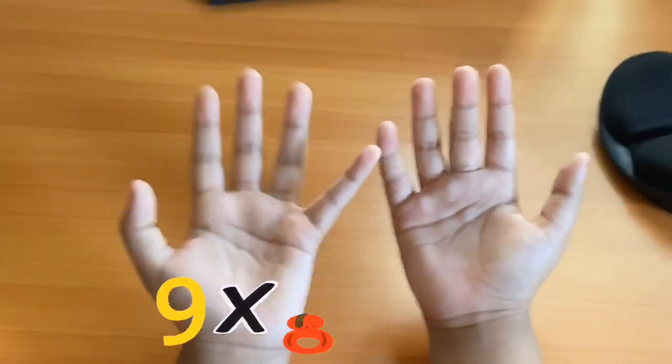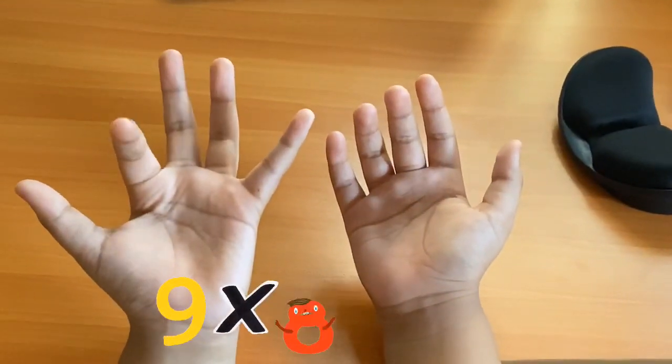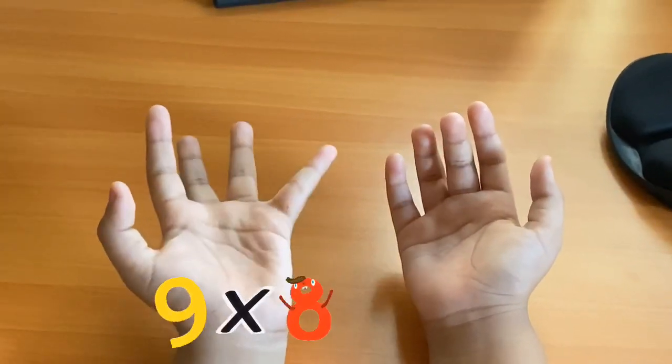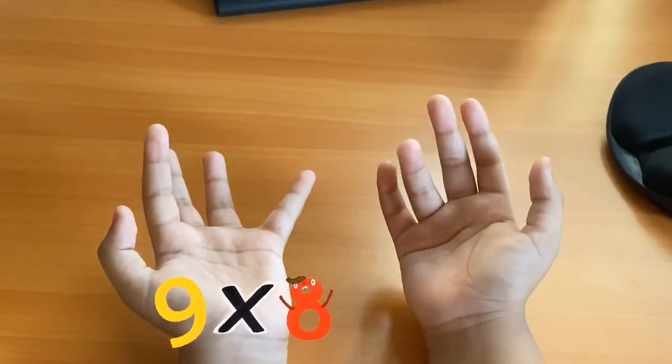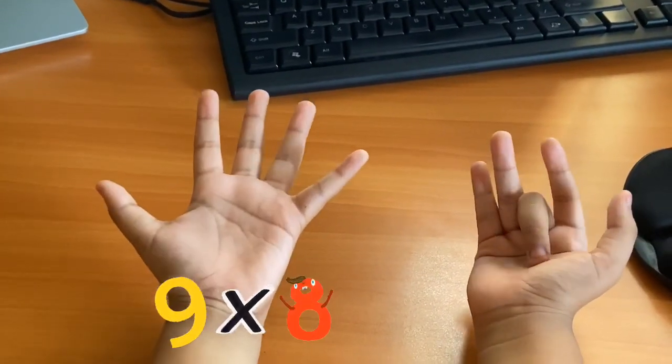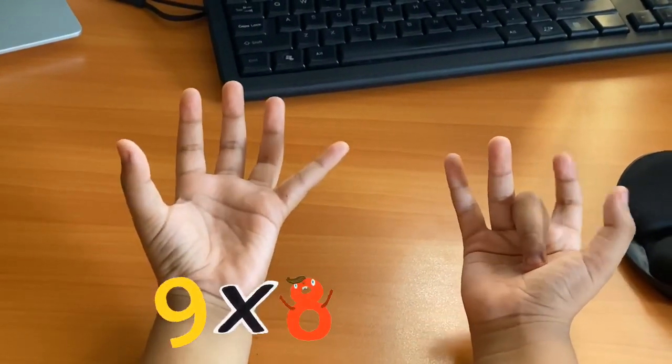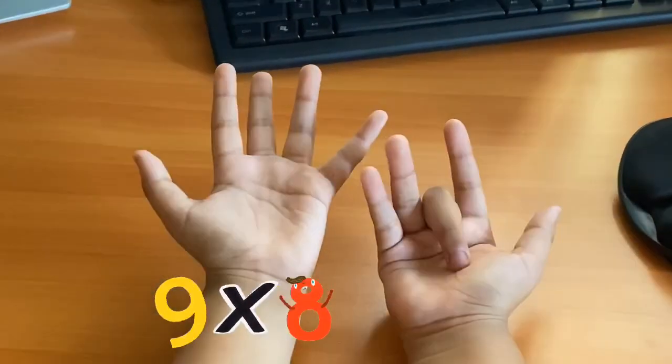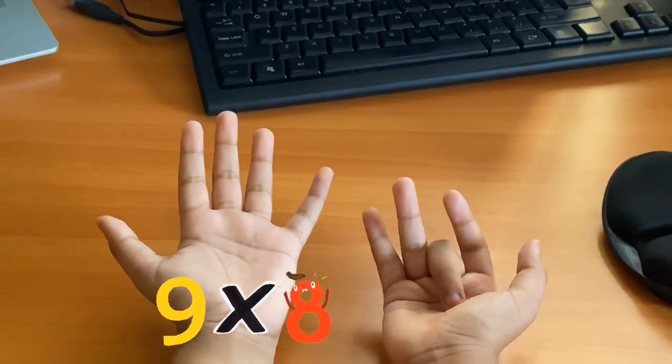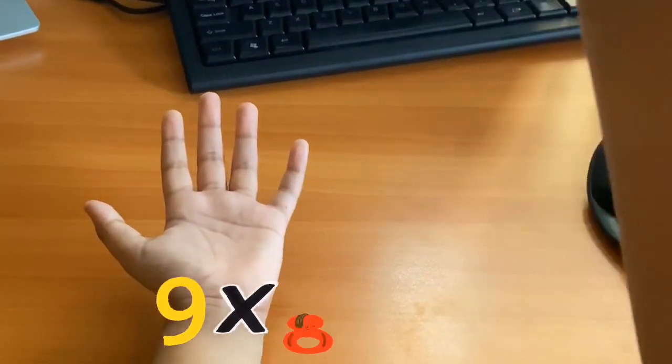Count from the left. 1, 2, 3, 4, 5, 6, 7, 8. So, this one is 8. This one is 7 and this one is 2. You need to count fingers from the left and the fingers from the right.